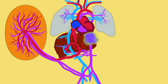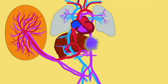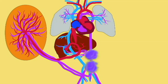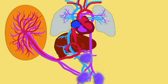The descending aorta possesses blood with a low oxygen content, being about 35% saturated with oxygen. This blood provides oxygen for the development of the tissues of the legs, of the digestive tract, and of the kidneys.